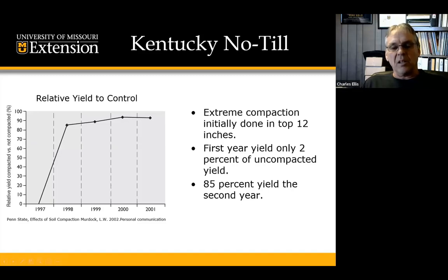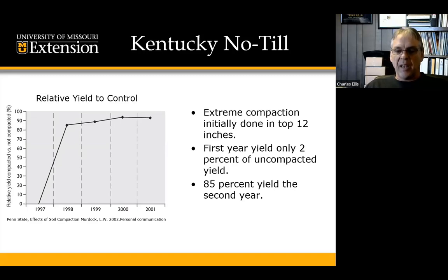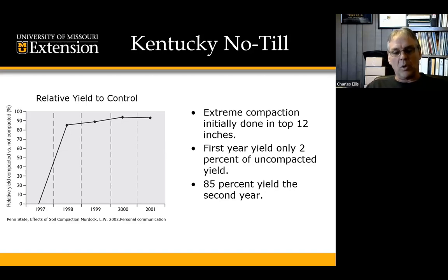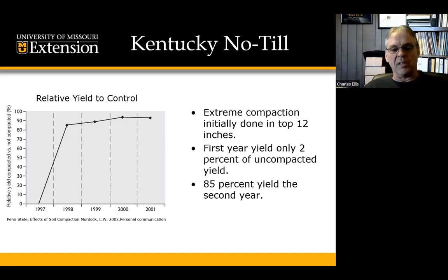Another study in Kentucky under no-till looked at extreme compaction in the top foot. They were seeing only a 2% yield reduction that first year, and then the soil had rebounded to 85% yield by the second year. Still, four to five years later they weren't back to 100% yield. But this is also showing that soils do have some capacity to repair themselves and rebound on their own without a tillage trip.